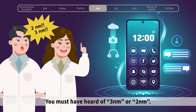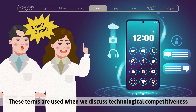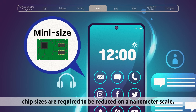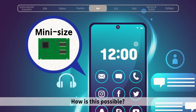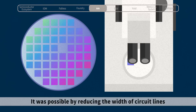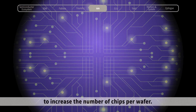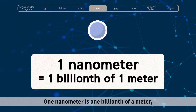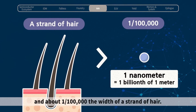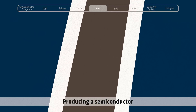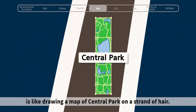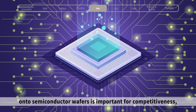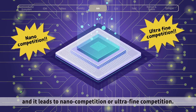You must have heard of 3 nanometer or 2 nanometer. These terms are used when we discuss the technological competitiveness of semiconductors. As electronic devices become smaller and more complex, chip sizes are required to be reduced on a nanometer scale. It was possible by reducing the width of circuit lines to increase the number of chips per wafer. A nanometer is used to measure the line width of circuit lines — one nanometer is one billionth of a meter and about one one-hundredth the width of a strand of hair. Producing a semiconductor is like drawing a map of Central Park on a strand of hair.